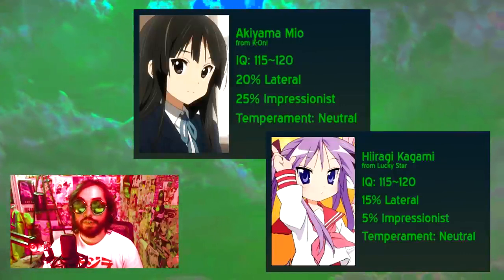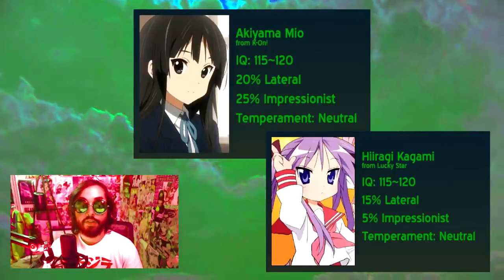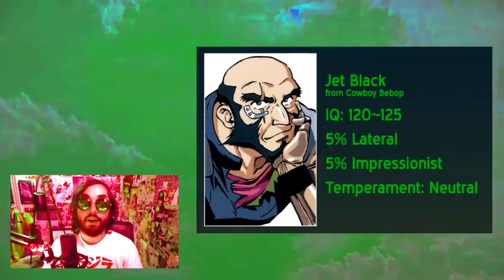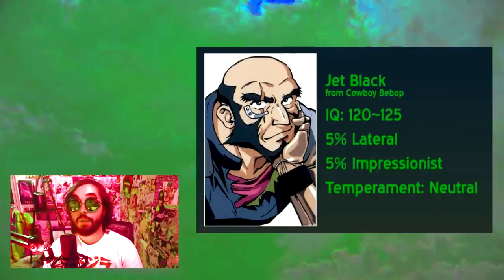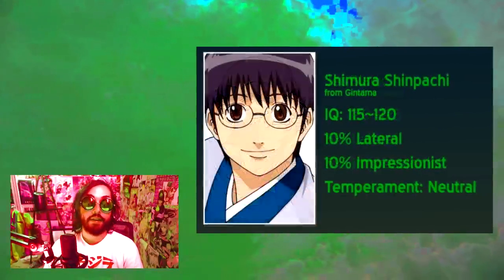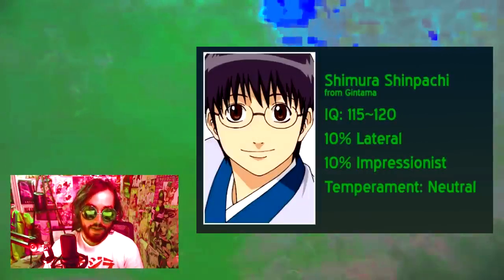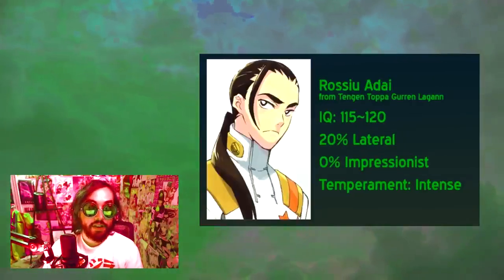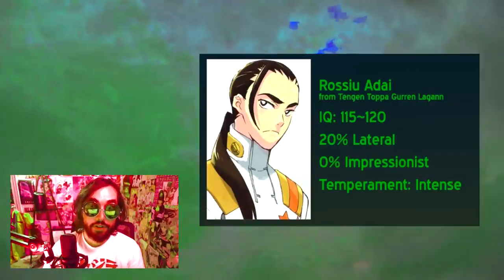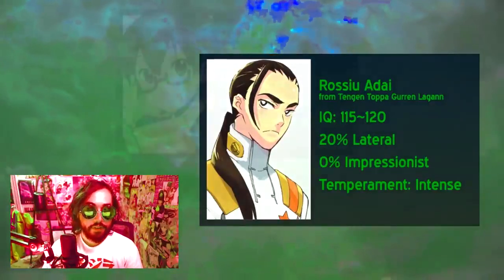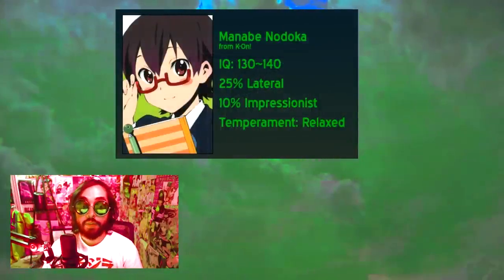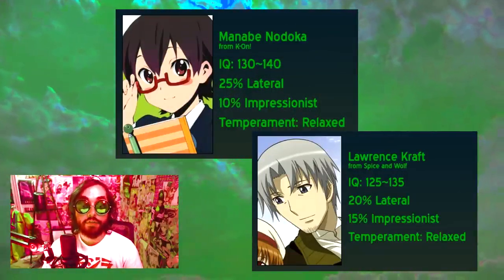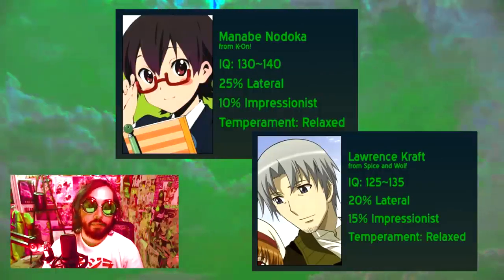Put this character type into a group of girls and they fulfill a similar straight-man role, as in the cases of Mio from K-On or Kagami from Lucky Star. Jet Black from Cowboy Bebop is probably the only guy structured enough to keep a hold on Spike. Some higher IQ characters in this category would be Noroka from K-On or Lawrence from Spice and Wolf, who tend to be lacking in imagination on their own but smart enough to recognize when someone else's less lexical abilities might be useful.